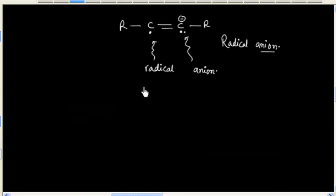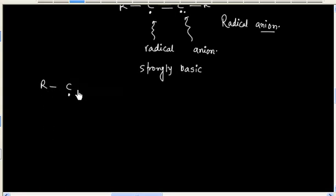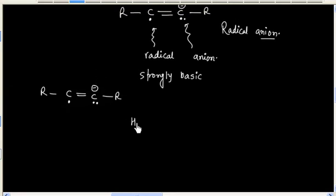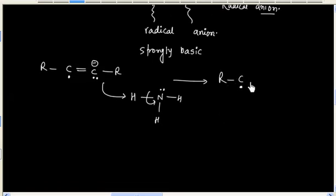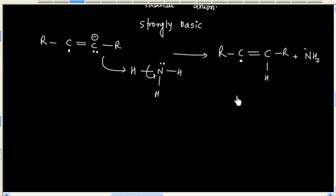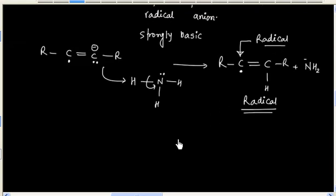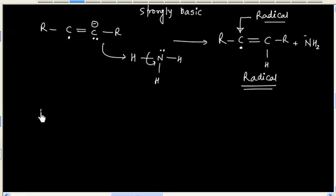Radical anions are strongly basic, so it takes a proton from ammonia. This intermediate is called a radical. So there are 2 intermediates so far: first is the radical anion, and next we have the radical.